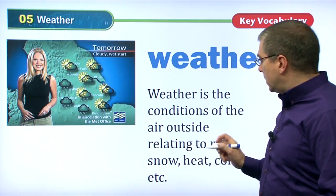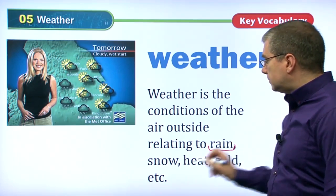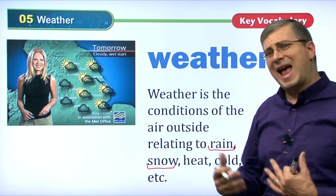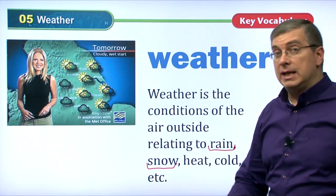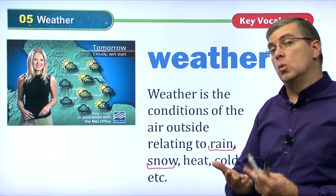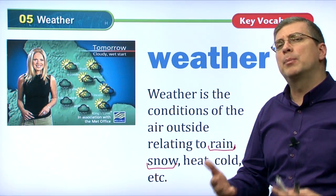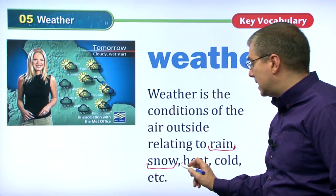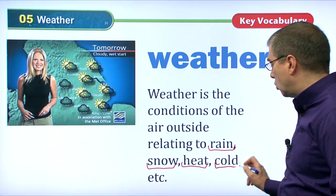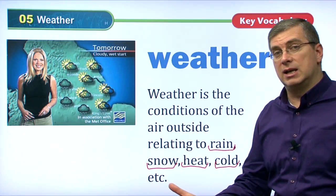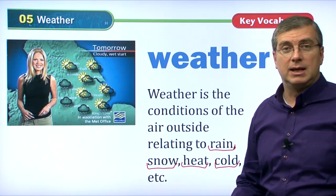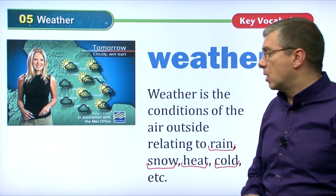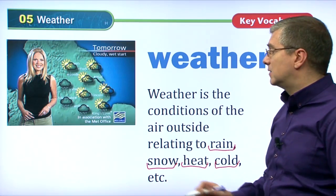That's an important thing. Here we have rain and snow — these are talking about the conditions. What is happening outside? Is it raining? Is it snowing? Is it windy? Is it sunny? But weather also talks about the temperature — heat and cold. What is the temperature? Is it hot outside? Is it warm? Is it cold? So we're talking about two basic things about weather: one is the conditions, the other is the temperature.